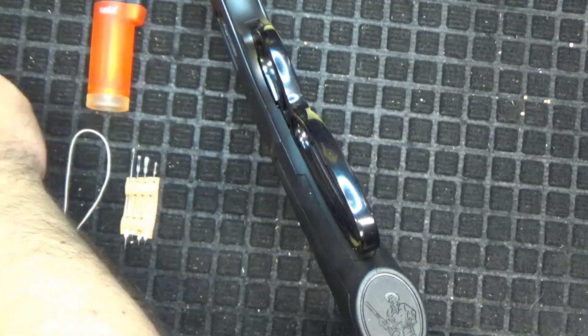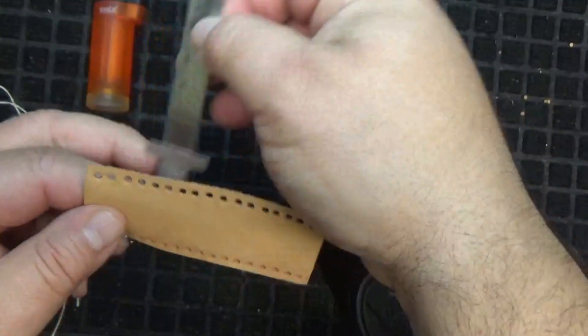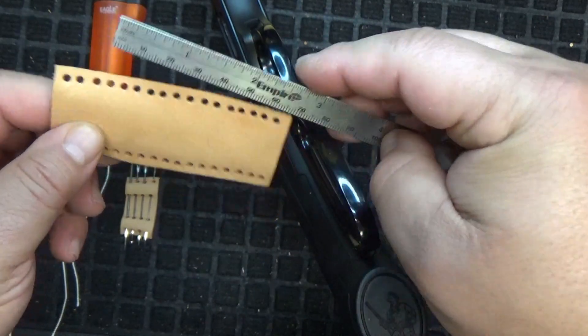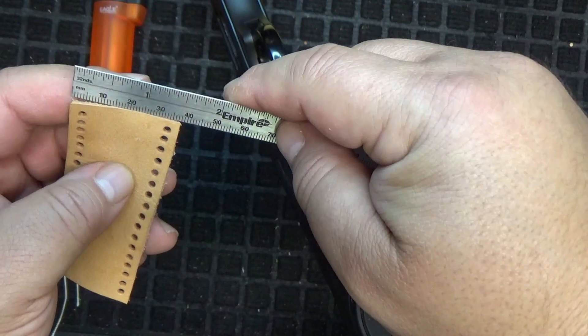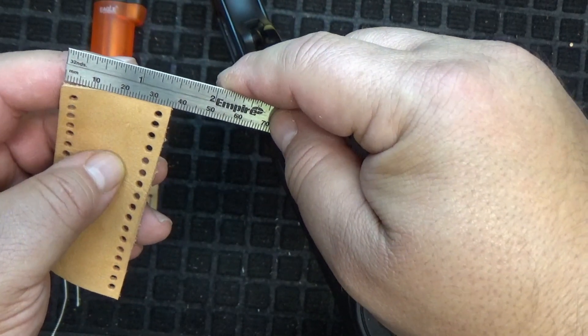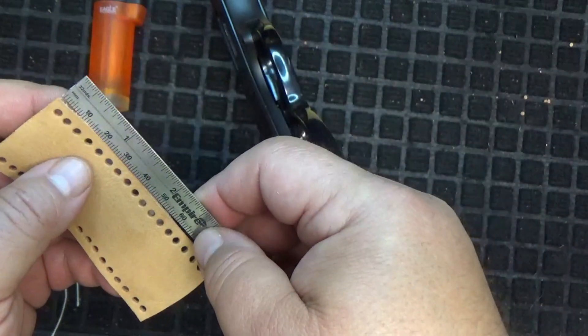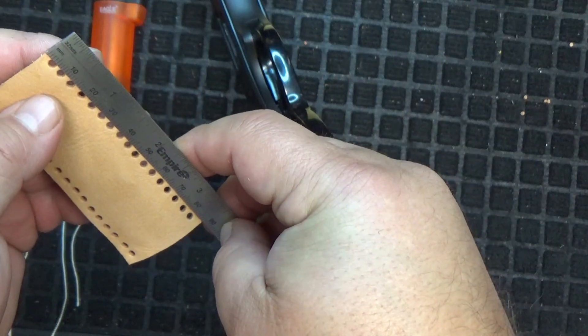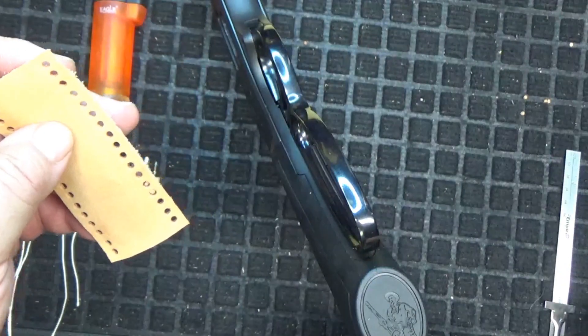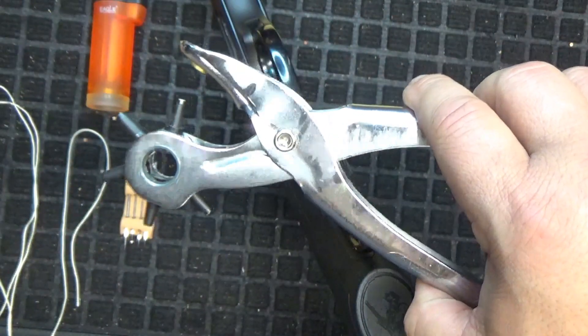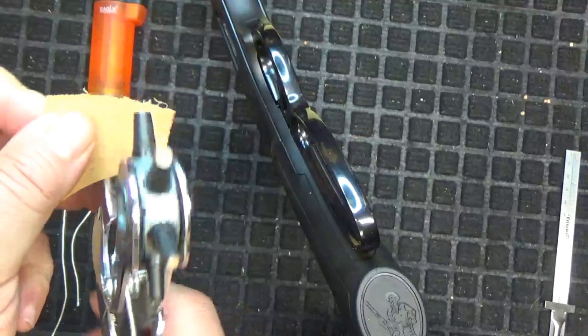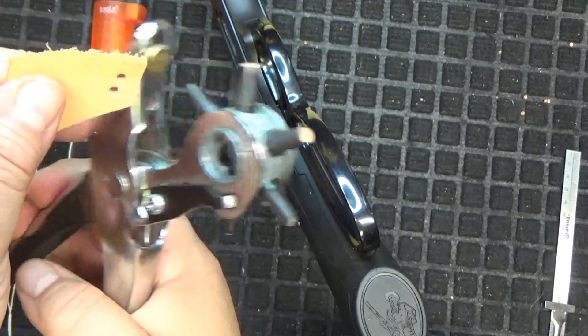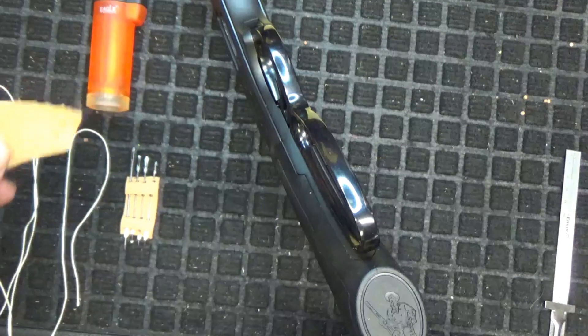I started out with a piece of leather that was about 90 millimeters long by 37 millimeters wide. I punched holes probably about every five millimeters and I used this tool, the smallest hole, but I'm sure you could use anything like a nail or a punch.